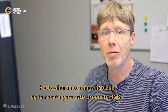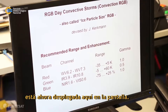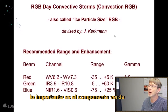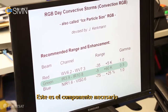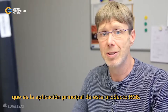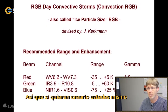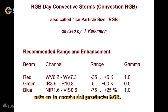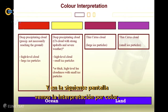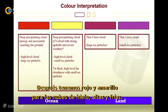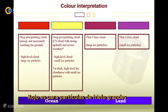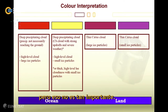Now let's look at the recipe of this RGB product displayed on screen. The important component is the green component, which is the 3.9 minus 10.8 channel difference — this is the component needed to detect cloud particle size, which is the main application of this RGB product. Regarding color interpretation, there are not many colors: low surfaces, ground, and ocean appear in bluish colors. Red is for large ice particles and yellow for small ice particles. Cirrus clouds have a slightly different color, but the three most important colors are blue, yellow, and red.